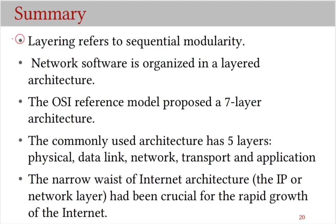To summarize: layering refers to sequential modularity where the upper layer uses the services provided by the lower layer. Network software is organized in a layered architecture. The OSI reference model proposed a seven-layer architecture but remained a reference model because there was no implementation. The commonly used internet architecture has five layers: physical, data link, network, transport, and application layers. The narrow waist of the internet architecture — the IP layer or network layer — has been crucial for the rapid growth of the internet.